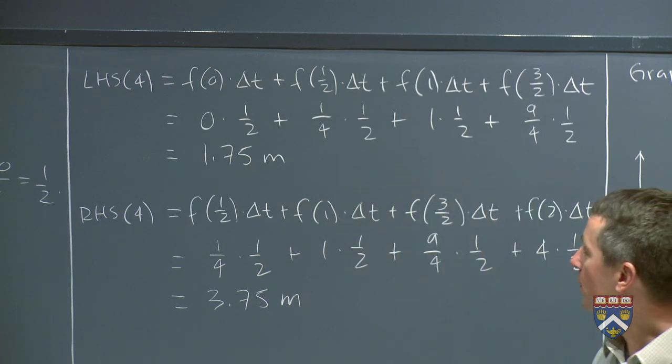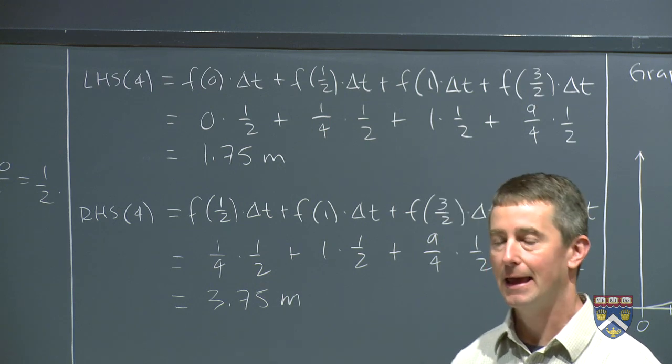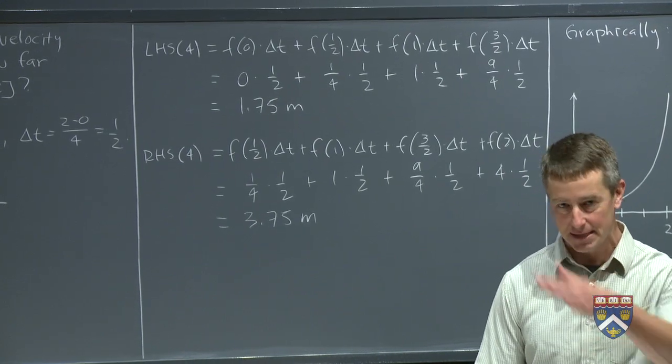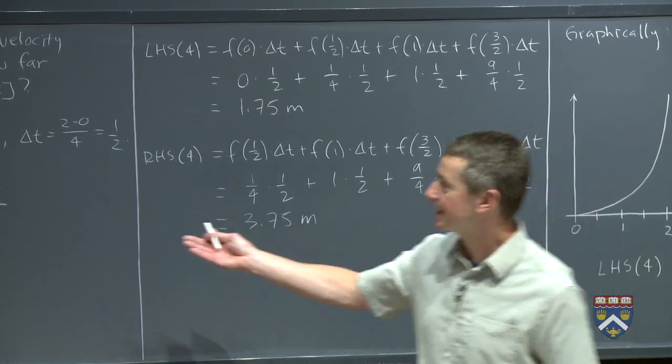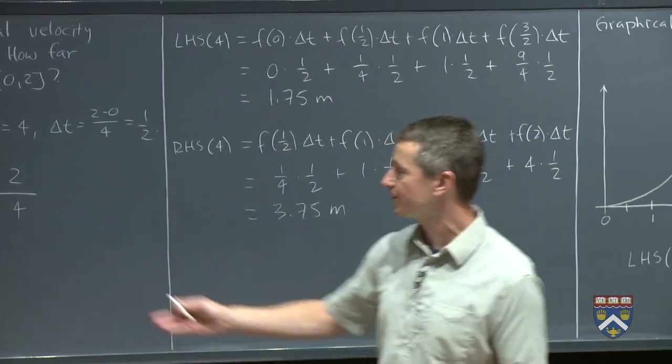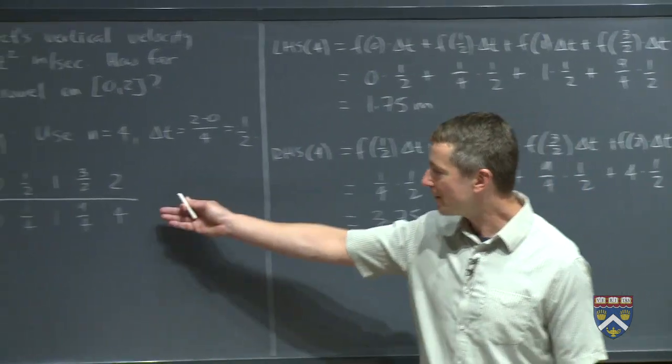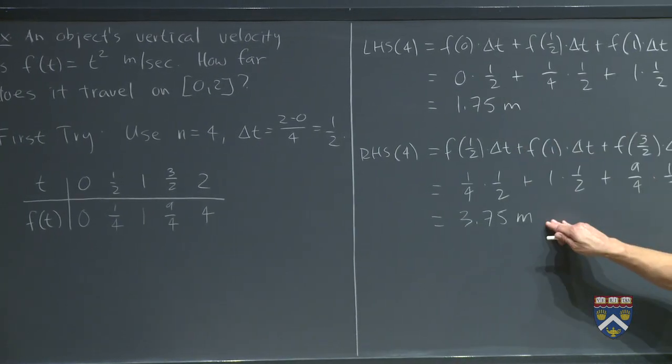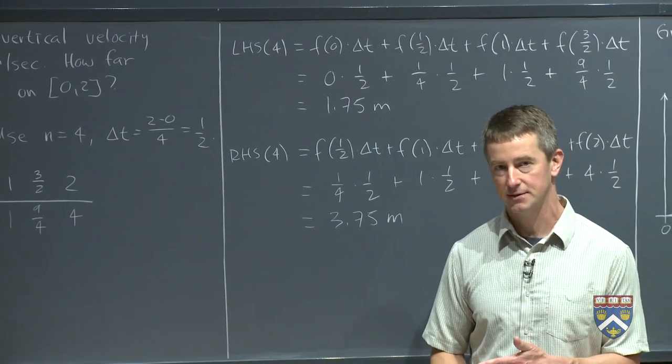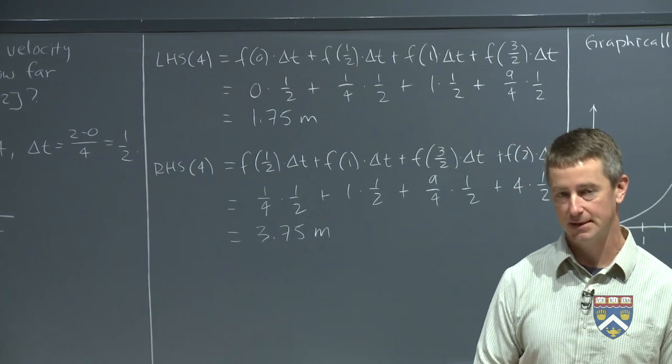So in this case, it was the left-hand sum that was the smaller of the two. So what's the difference? In the first example that we did, the rate of change was a decreasing function. In this example, the rate of change is an increasing function, and that's what makes the difference. If you have an increasing function, values on the right are bigger than values on the left. So if f is an increasing function, the right-hand sum will be bigger than the left-hand sum. If f is a decreasing function, as it was in our oil tank example, then the left-hand sum will be bigger than the right-hand sum. That's what it comes down to.